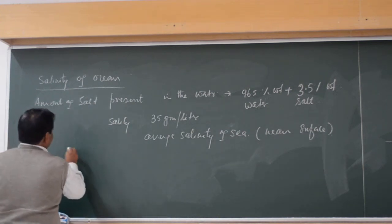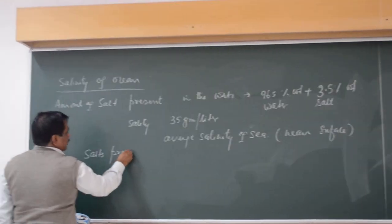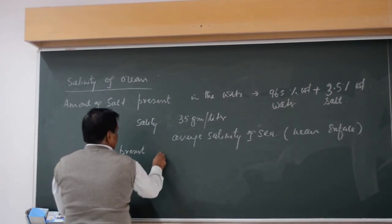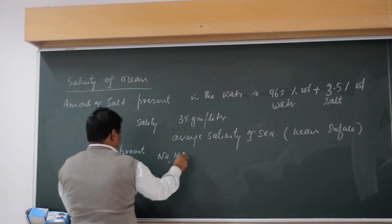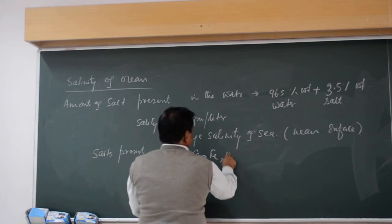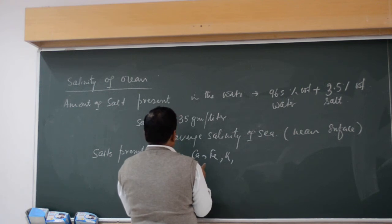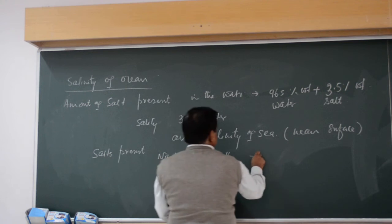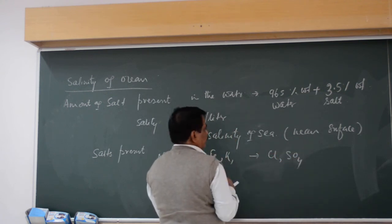What are the salts or ions present in the water? It is predominantly sodium, magnesium, calcium, iron, potassium, and fluorine, plus SO4.